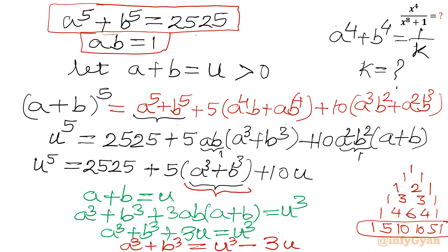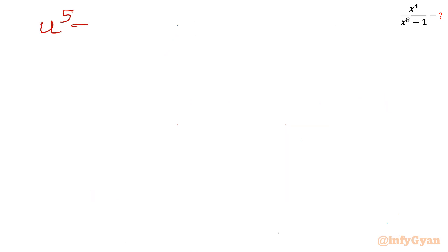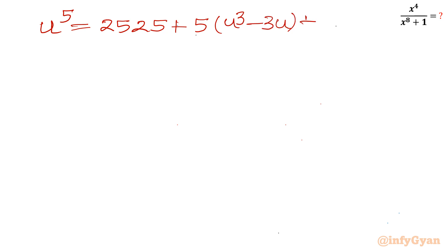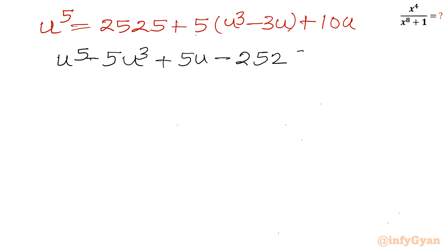Applying this value: u⁵ = 2525 + 5(u³ − 3u) + 10u. Simplifying and taking all terms to one side gives the quintic equation: u⁵ − 5u³ + 5u − 2525 = 0. This is a degree-5 equation.